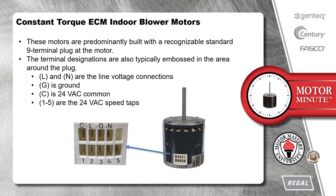Constant Torque ECM Indoor Blower Motors are predominantly built with a recognizable standard 9-terminal plug at the motor. The terminal designations are also typically embossed in the area around the plug. L and N are the line voltage connections, G is ground, C is 24V AC common, and 1 through 5 are the 24V AC speed taps.